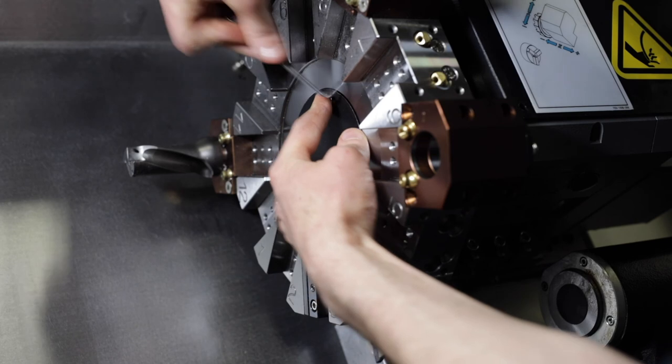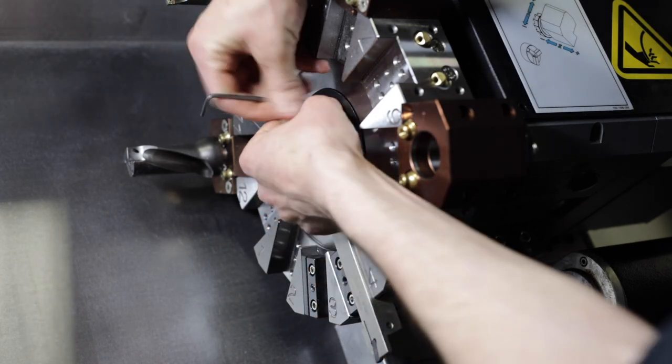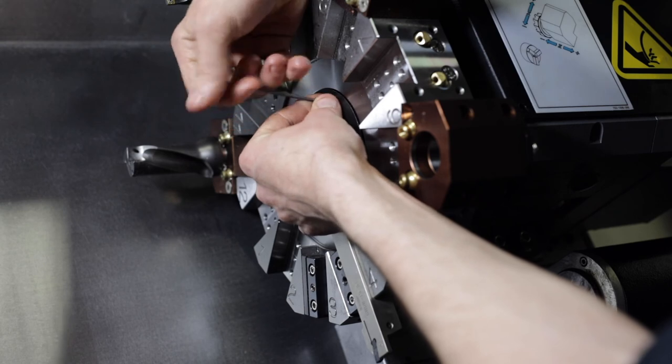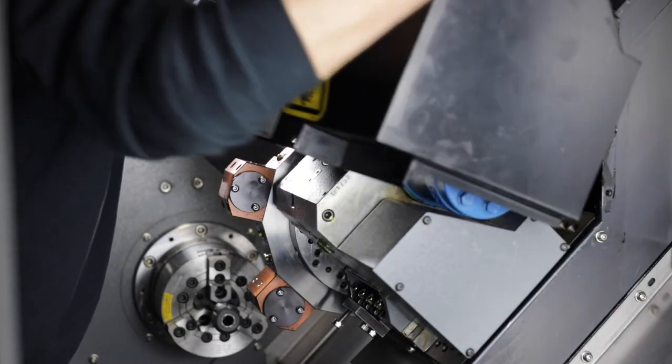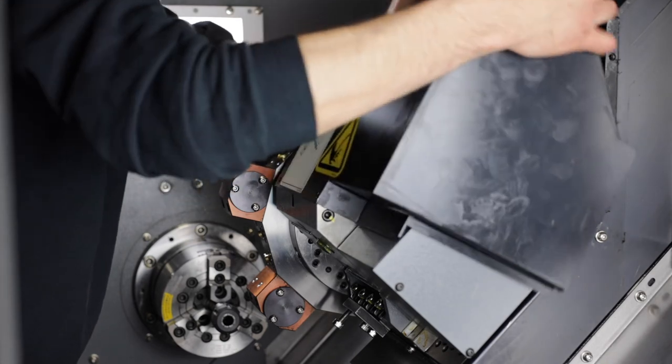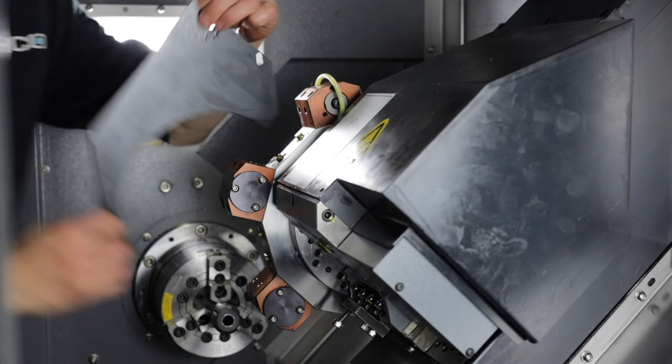Once you are happy with the turret location, simply reinstall the center plate cover on the turret disc. Then, in reverse order, install the turret body covers. Once the covers are installed, you should be good to go.